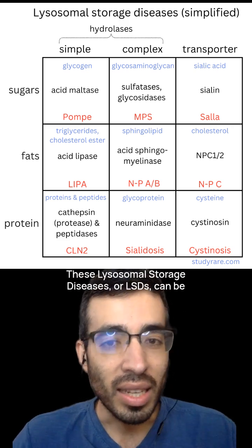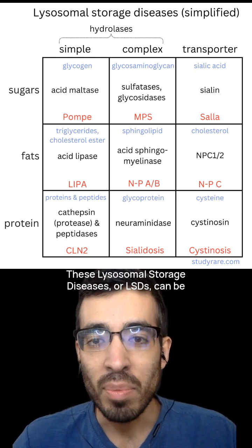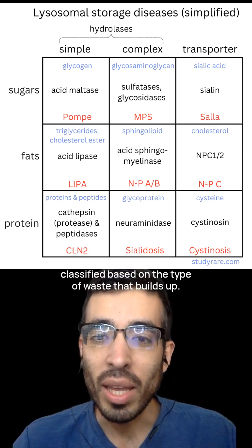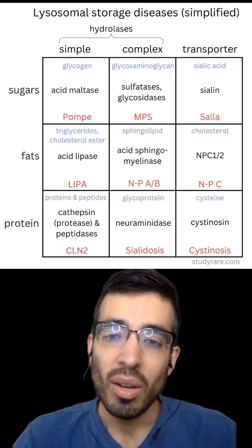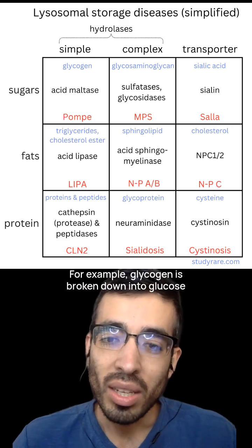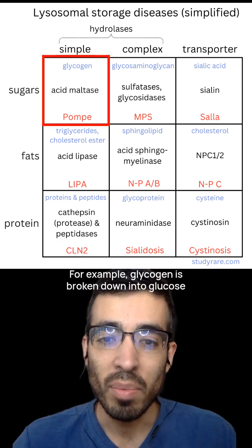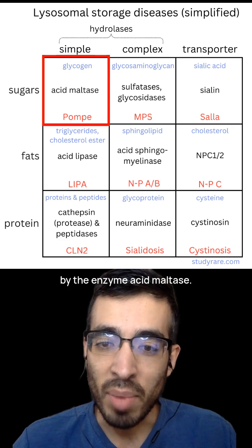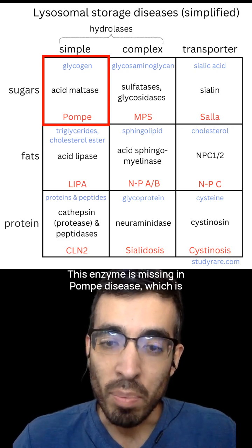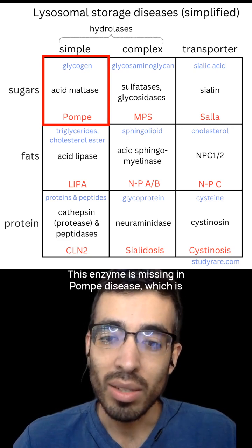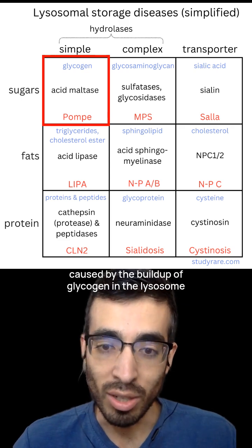These lysosomal storage diseases, or LSDs, can be classified based on the type of waste that builds up. For example, glycogen is broken down into glucose by the enzyme acid maltase. This enzyme is missing in Pompe disease, which is caused by the buildup of glycogen in the lysosome.